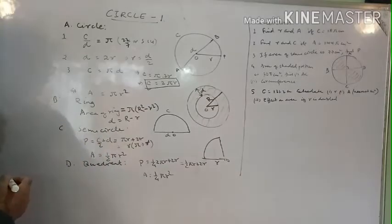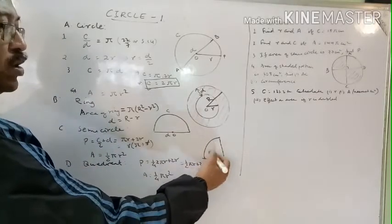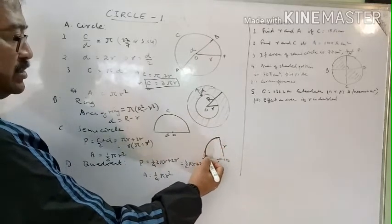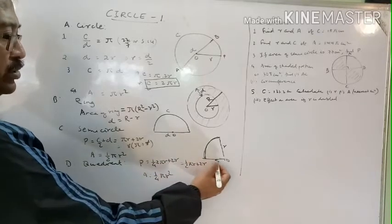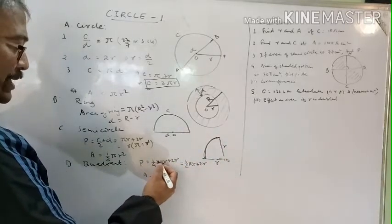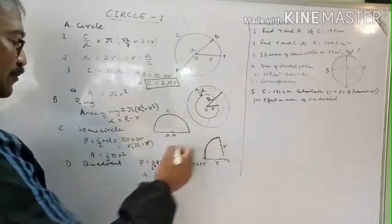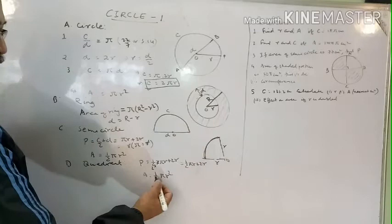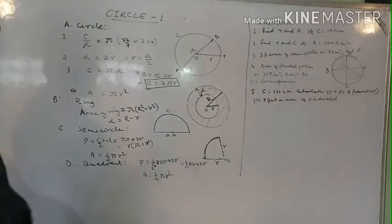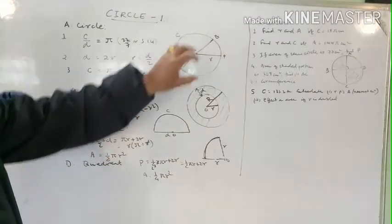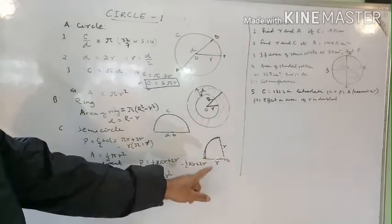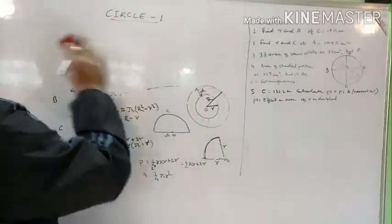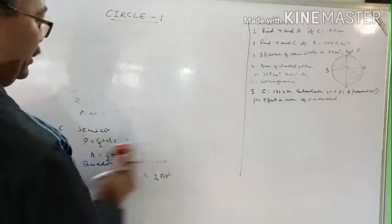A quadrant is a quarter of a circle. Its perimeter is one-fourth of the circumference plus two radii: (1/4)(2πr) + 2r, which simplifies to (1/2)πr + 2r. The area of a quadrant is one-fourth of πr², so (1/4)πr². When doing a question, read carefully to see whether a full circle, semicircle, quadrant, or ring is given and choose the correct formula.